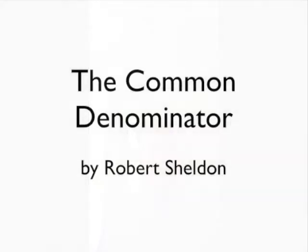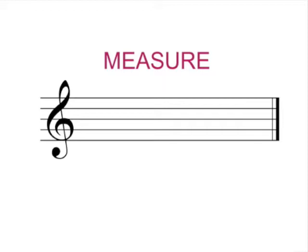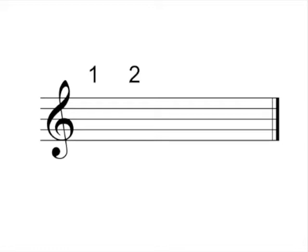The Common Denominator, like all music, is organized in small, like-sized sections called measures. Measures are like containers that can hold a predetermined number of beats of music. For The Common Denominator, each measure can hold four beats.